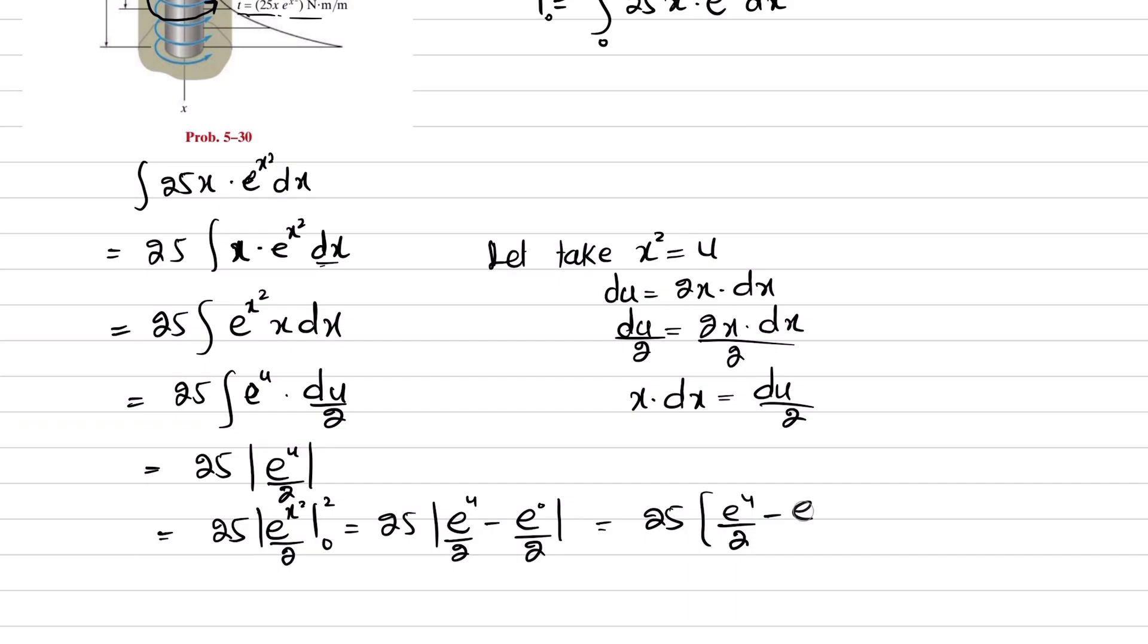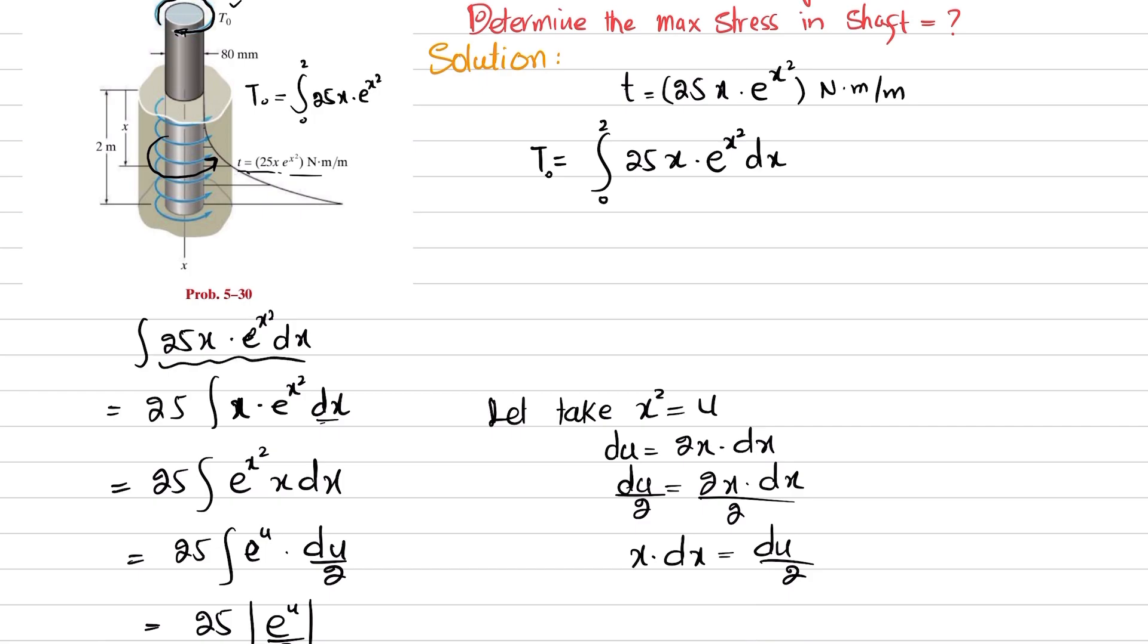When you solve this, you will get 669.98 newton-meters. So T₀ is approximately 670 newton-meters.